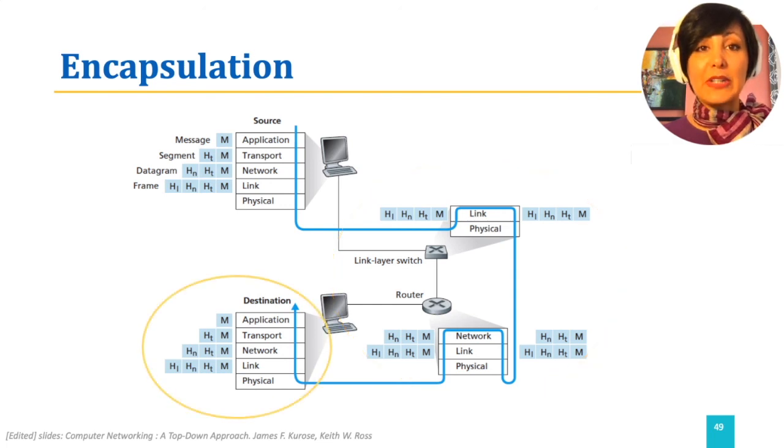When the frame arrives at the destination for the data to be delivered to the using application, the headers of the link layer, network layer, transport layer, and application layer are analyzed and removed respectively for the data to be delivered to the application.